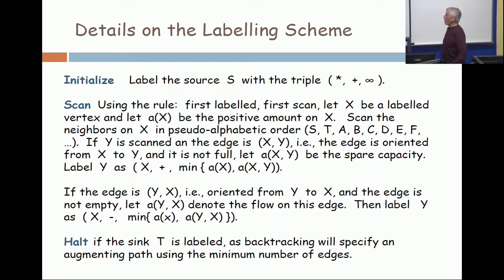We're going to start by labeling the source with a triple (*, +, ∞). Let me suggest what those three symbols mean. The source gets its resources from somewhere - I don't know where. An oil well, workers manufacturing things, stars. There's no arrows coming into the source, so the source just creates stuff.